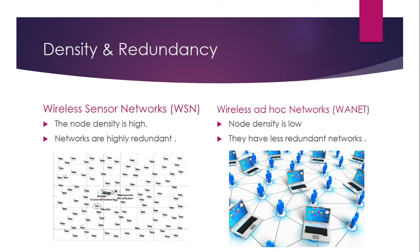Density and redundancy: the density of nodes in WSN is high. For example, we may deploy hundreds and thousands of sensors in a forest to measure various parameters, forming a dense network. We won't have the same number of wireless ad-hoc network nodes in the same area with the same density.